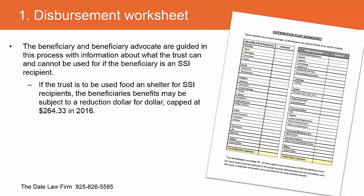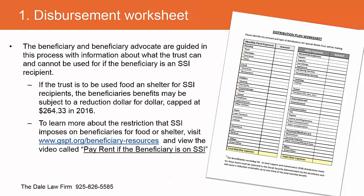A common myth I hear all the time is that you can't use a special needs trust for food and shelter. Let's be realistic — what do our beneficiaries need more than anything else? Food and shelter. I can't remember the last time my office drafted a special needs trust that could not be used for food and shelter. Of course we want to keep that as an option, but we also have to realize that paying for food and shelter items can cause a reduction in the beneficiary's benefits if they're on SSI.